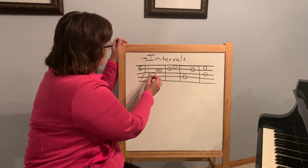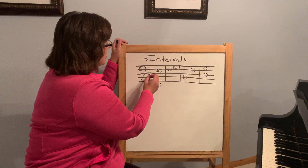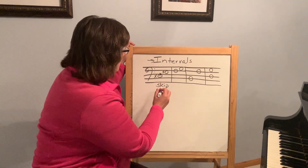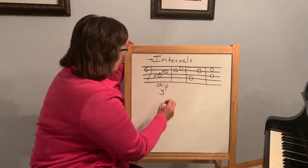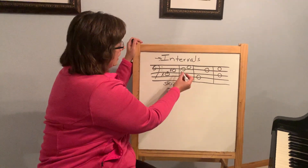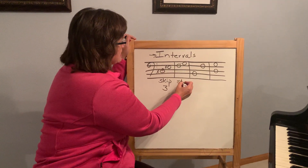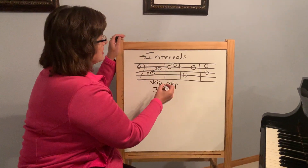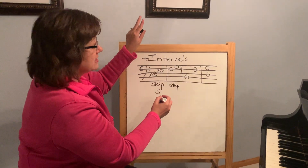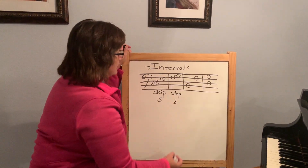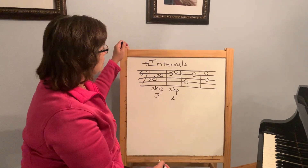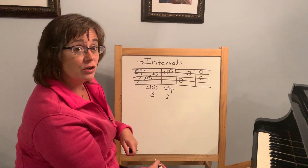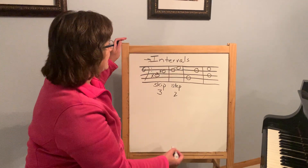An interval means the distance between two notes and the number of spaces and lines that you are covering. So yes, this is a skip, but I could also call it space-line-space — I'm encompassing three parts of that staff, so I could also call it a third. Line to space we've been identifying as a step, but I'm moving from one line to one space — that's two parts of the staff, so I could call that an interval of two. As our intervals start to get bigger, it's going to be easier to identify them by name.